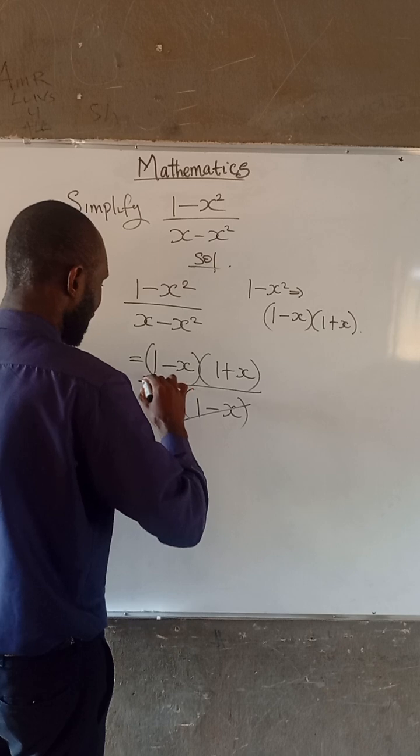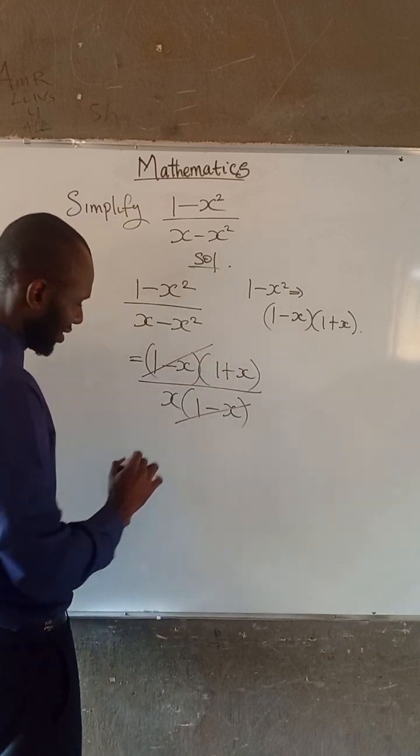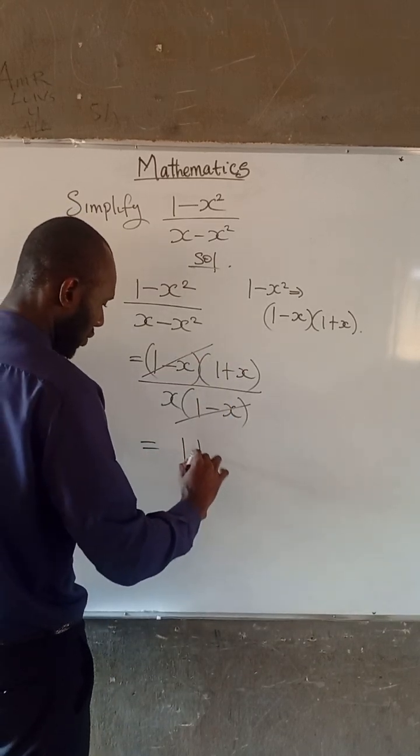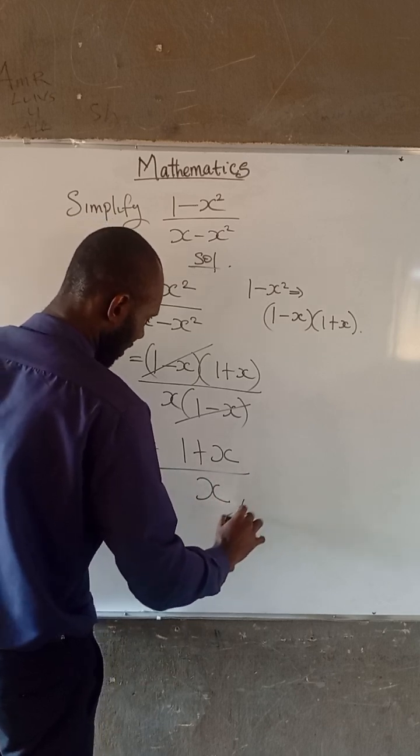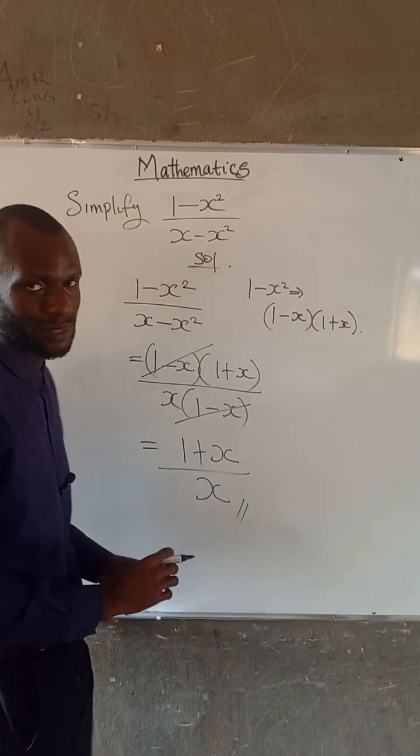So this can cancel out this. So therefore, 1 plus x is divided by x. That is a simplification.